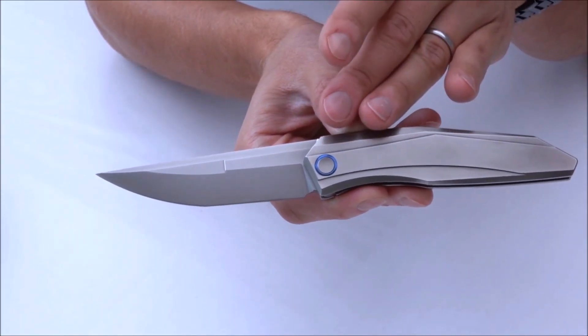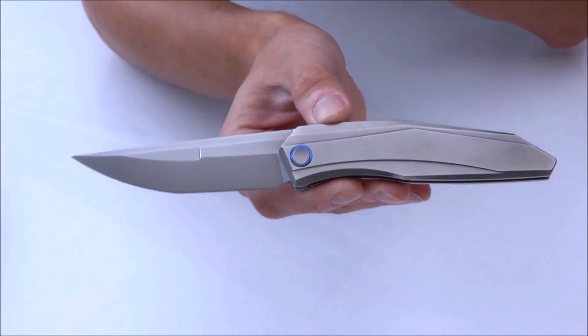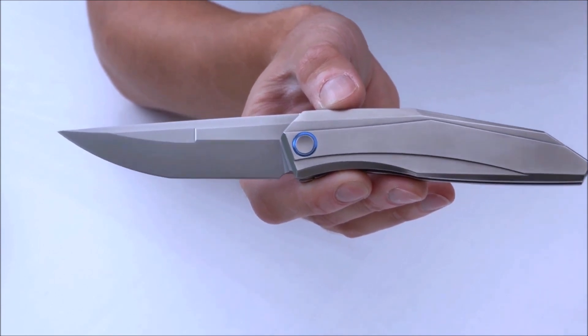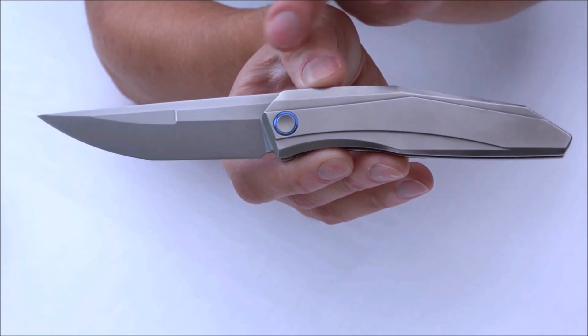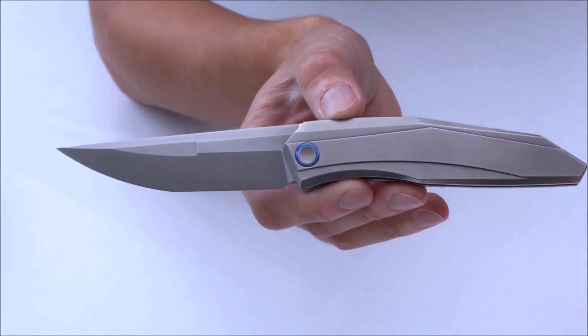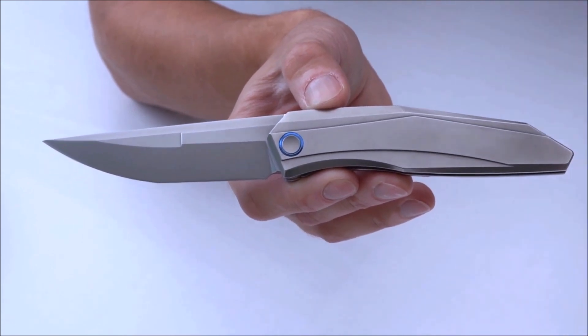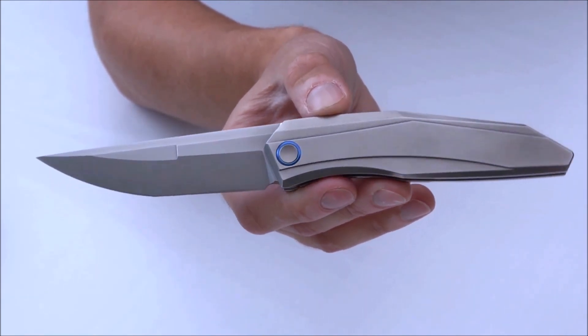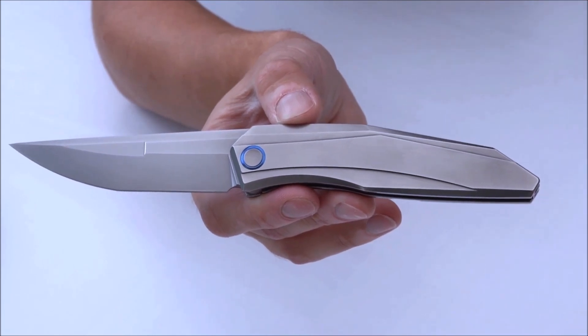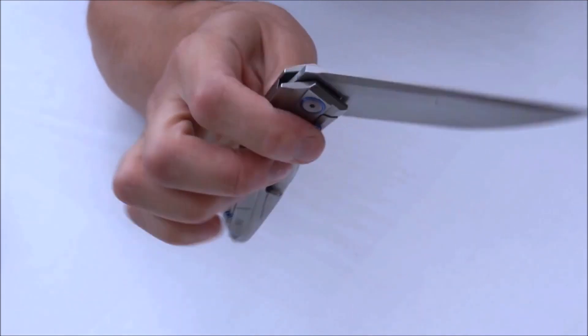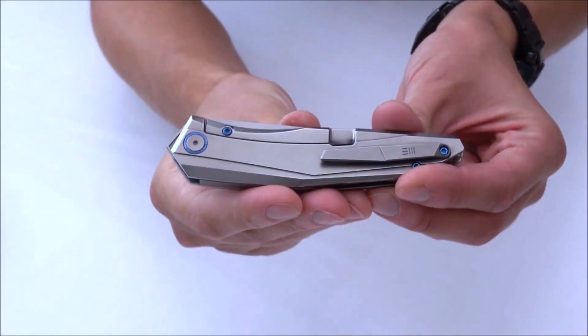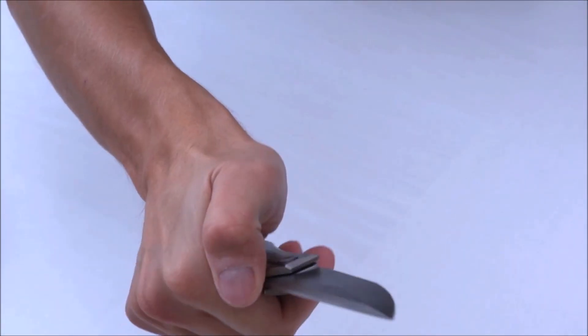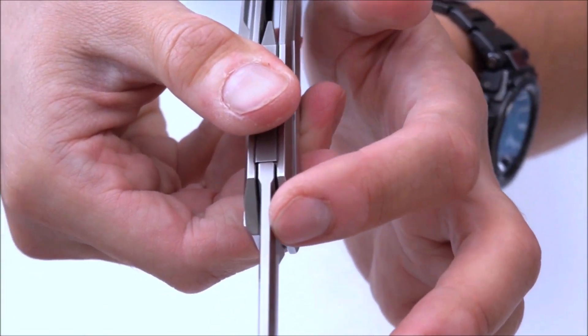Obviously here we have titanium scales. We have a CPM-20CV blade. I mean, that is the one steel that Weknife is working the absolute most with right now. We have a total length here of 225 millimeters, so 22.5 centimeters. We've got a blade length of 99 millimeters, 9.9 centimeters. I'm tempted to just say that the blade is 10 centimeters or 100 millimeters. We've got a closed length of 128 millimeters.